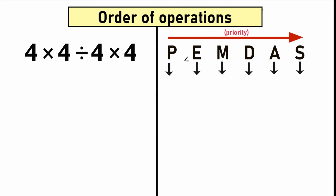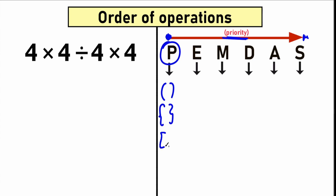PEMDAS is not an English word — it's like a quick checklist. Each of these letters stands for something. Let's go from left to right, because we are talking about priority — higher priority on the left and lower priority on the right. The letter P stands for parentheses. Everyone knows this type of bracket. The highest priority has parentheses, so we need to evaluate the expression inside parentheses first. Parentheses is a grouping symbol.